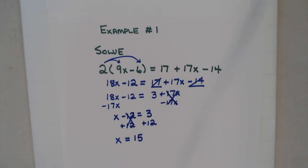Again, this is a nice checklist when you've got really long or complicated-looking problems — just go down your checklist. Use the distributive property first if you can. Combine like terms if you can. Get rid of the variable on the right side if you can. Add or subtract to both sides. Then multiply and divide.